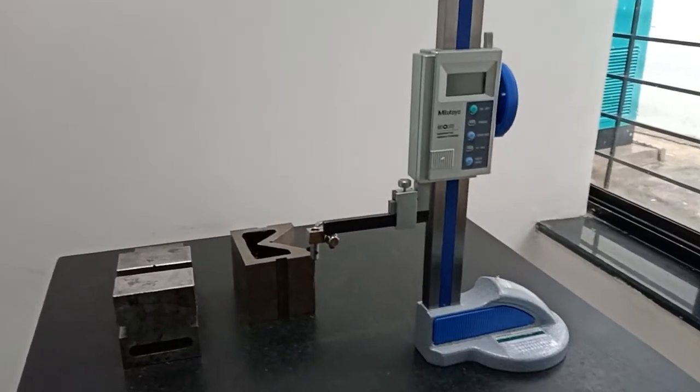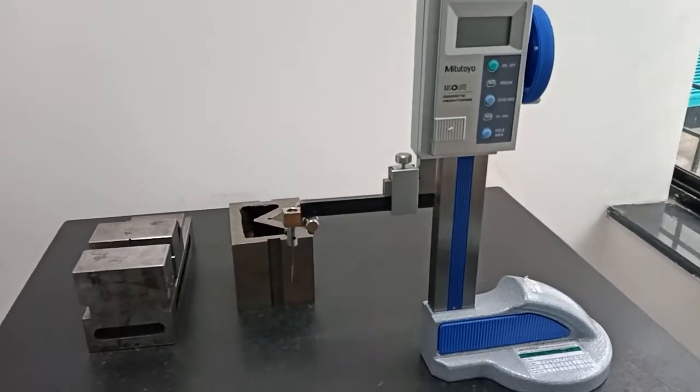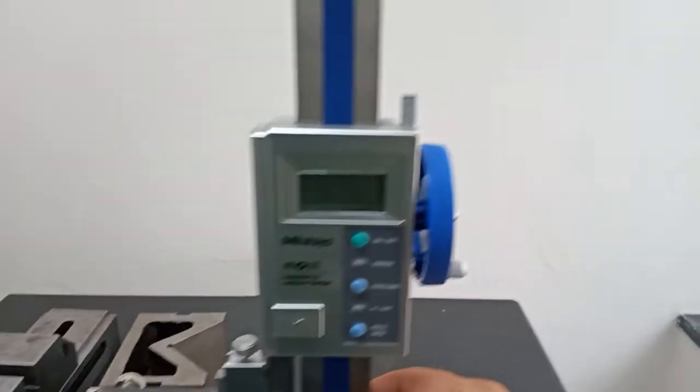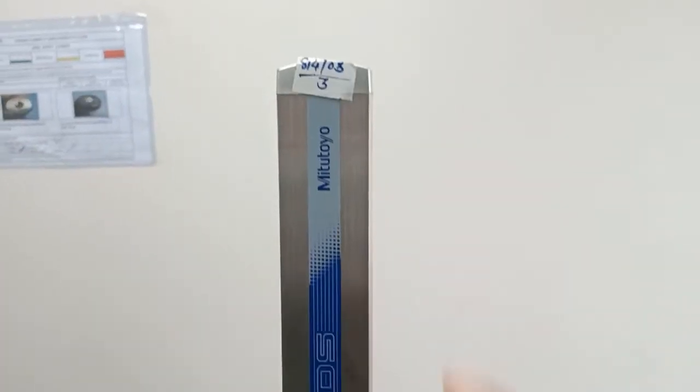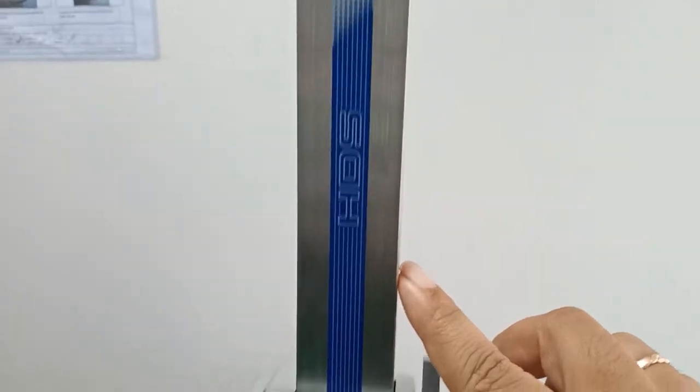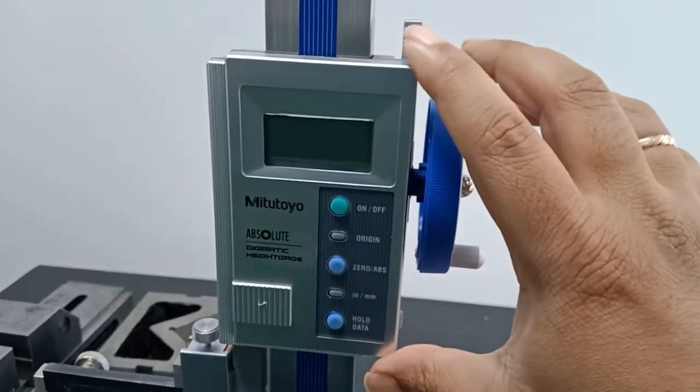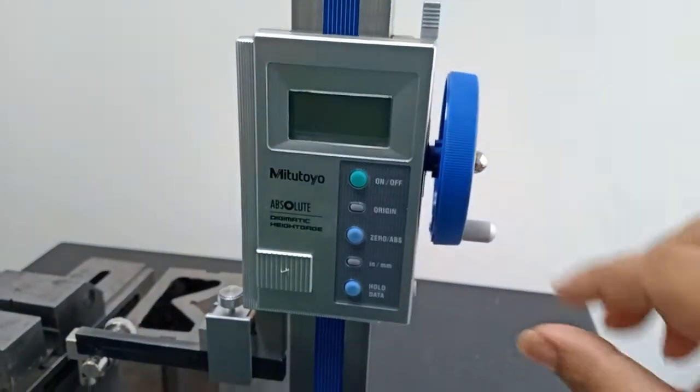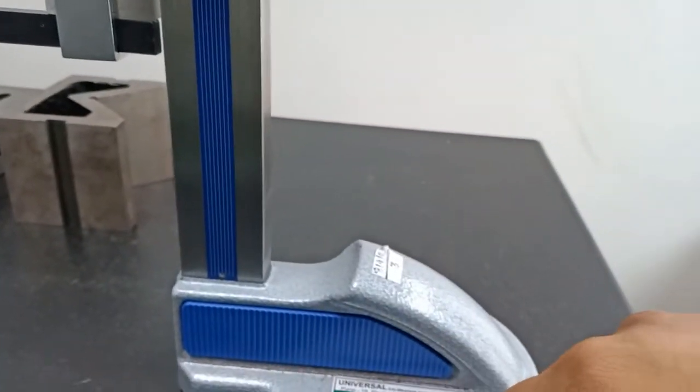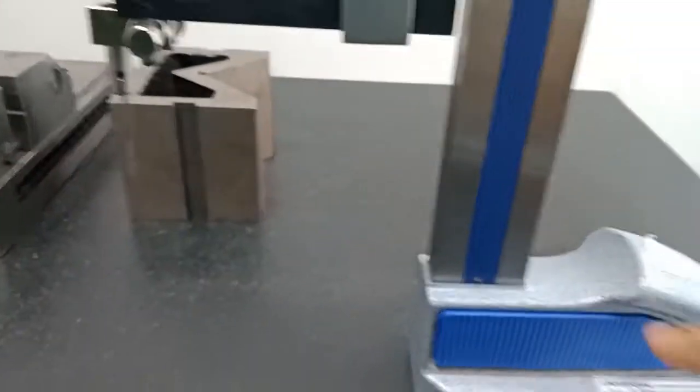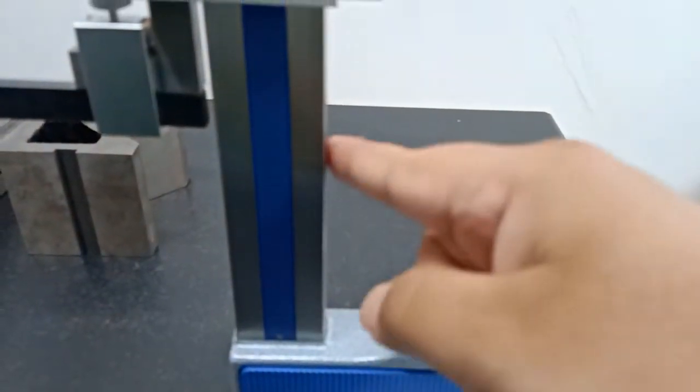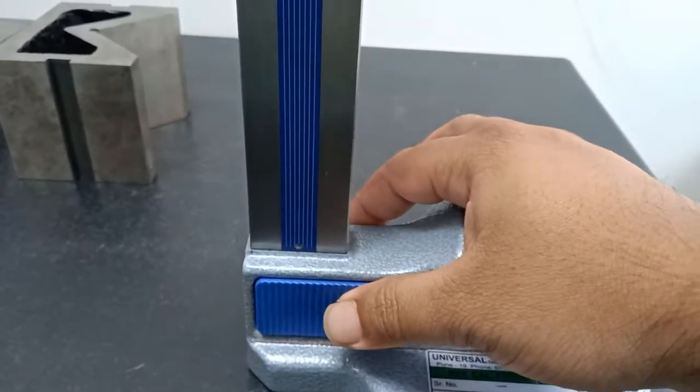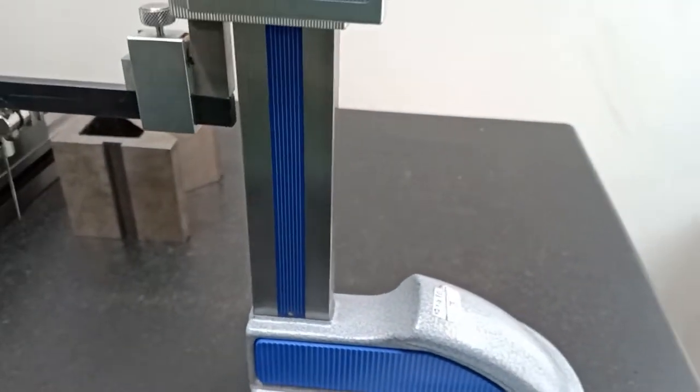Now let us see the height gauge. This is height gauge, this is Mitutoyo HDS and this is digital. The least count is 0.001. This is the base, and the base is joined with stem by riveting and it is calibrated within 0.001.